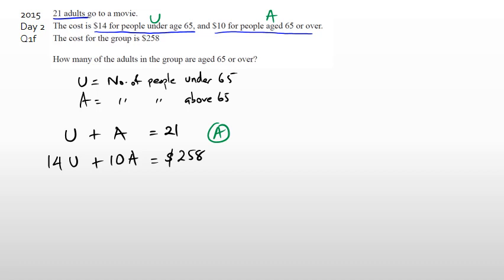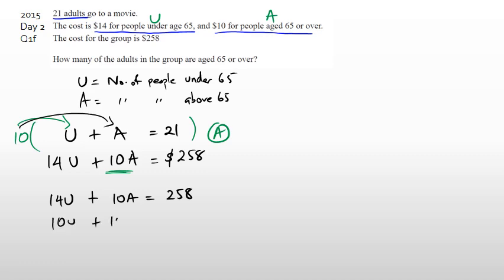Try and get into the habit of writing equations. Once you get to this part, be very careful which variable you want to eliminate. A lot of people go straight away to eliminate U, but that means multiplying the whole equation by 14 — 21 times 14 — which some people find difficult. Since there's a 10 there, multiplying by 10 is a lot easier. So I'm going to multiply the top equation by 10, writing the bottom one first: 14U plus 10A equals 258. Then 10U plus 10A equals 210.